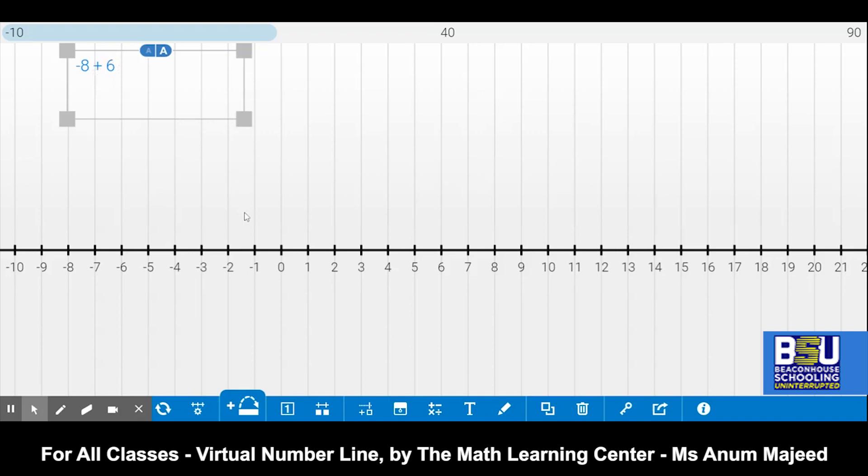This number line also has a pen tool which I can use to show the students the skip count virtually. The starting point is minus 8 over here, and then I have to move 6 places forward. Why forward? Since this is a plus sign in between minus 8 and 6, so I'm going to move 6 steps forward. Let's move: 1, 2, 3, 4, 5, 6. Where did I land? I landed on minus 2. So I can write the answer minus 2. This is how simple it is to use this number line and understand things so clearly.